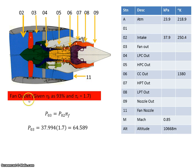We were told that the fan has an efficiency of 93% and that the fan pressure ratio is 1.7. So the output of the fan, P3, is P2 multiplied by the pressure ratio of 1.7. We take our 37.994 multiplied by 1.7 and we get 64.589 kilopascals.